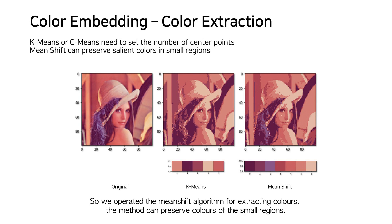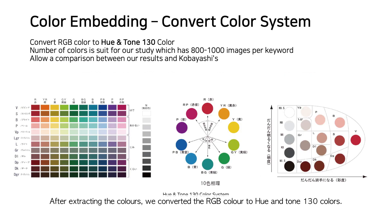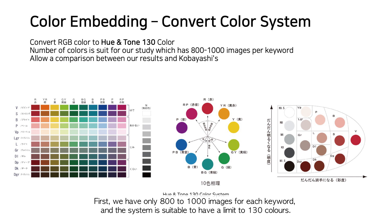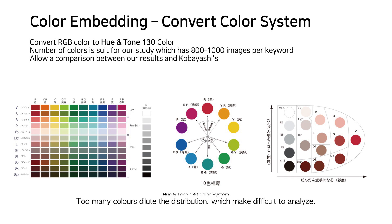After extracting the colors, we converted RGB color to a hue-and-tone system of 130 colors. There are two reasons to choose this color system. First, we have only 100–1000 images per keyword, and this system is suitable for being limited to 130 colors, as too many colors dilute the distribution and make analysis difficult. Second, it is possible to compare results directly with Kobayashi's.